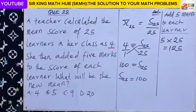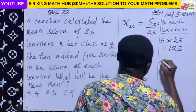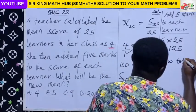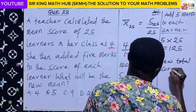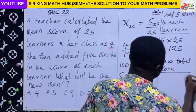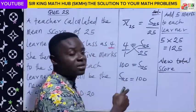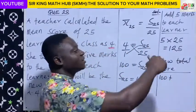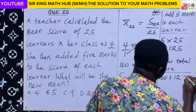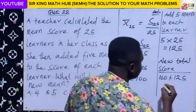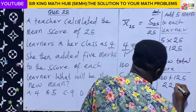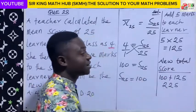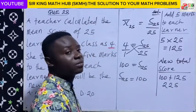So now, what is their new total score? Their new total score: at first their total score was one hundred, and the teacher has added a total of one hundred and twenty-five. So their new total score is two hundred and twenty-five. That is the sum of the twenty-five learners' scores after five marks each have been added.